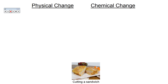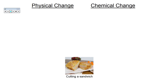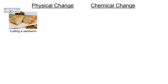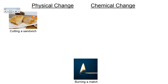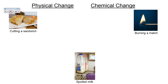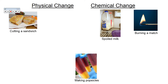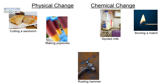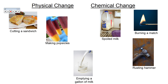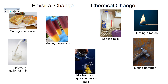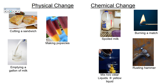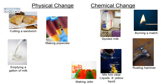Take a look at these examples and identify whether they are physical or chemical changes. Cutting a sandwich — physical change; the substance has not changed its identity. Burning a match — chemical. Spoiling milk — chemical. Making popsicles — physical. Rusting hammer — chemical. Emptying a gallon of milk — physical. Mixing two clear liquids and getting a yellow substance — chemical. Making jello — physical.